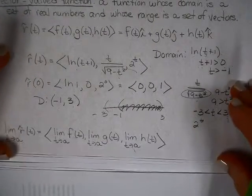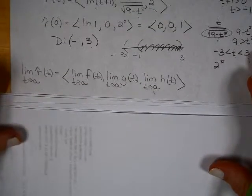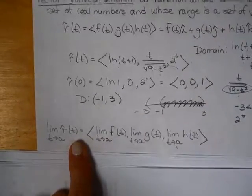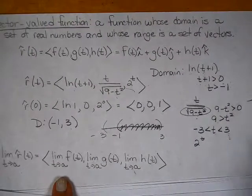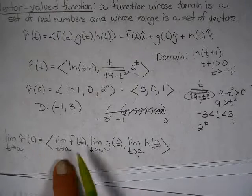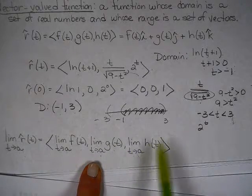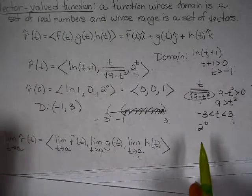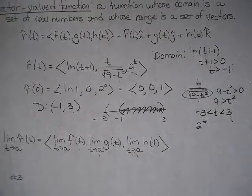Alrighty, well, we need to be able to take the limit of a vector function. To take the limit as t approaches a of a vector function, you just take the limit of each of the components. The limit as t approaches a of f of t, limit as t approaches a of g of t, and the limit as t approaches a of h of t. And the limit is going to give you a vector. So let me look at one of your book, number 3.